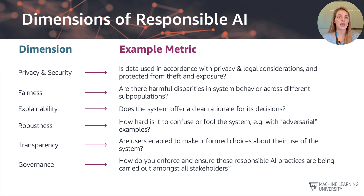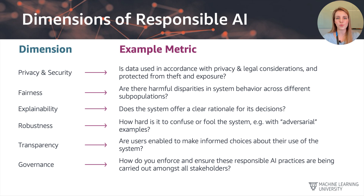The third dimension is explainability, where we ask: does the system offer a clear rationale for its decision? The fourth dimension is robustness — how hard is it to confuse or fool the system. In a machine learning system the end user typically only gets the model prediction, and there have been cases where users were able to fool the system through so-called adversarial attacks. We'll cover robustness and these adversarial examples in more detail shortly.